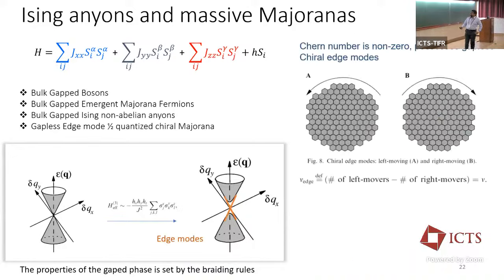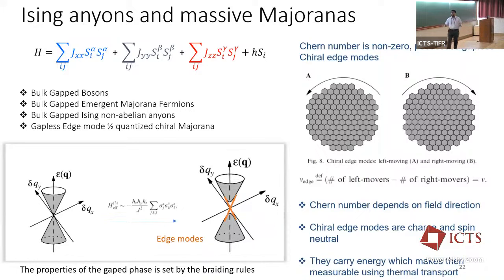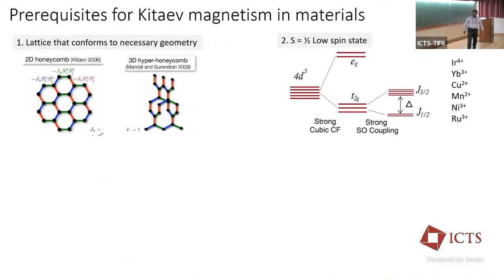These edge modes don't carry any charge or spin — but they carry heat. When the Chern number is non-zero, the system will always possess gapless chiral edge modes if we can find a material that exhibits this. You can get signatures of these excitations in both neutron scattering and thermal transport, which people have done.